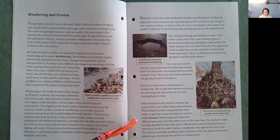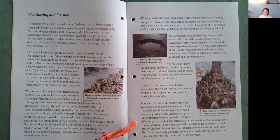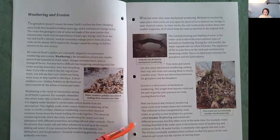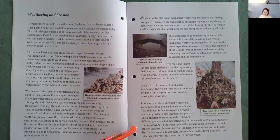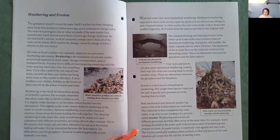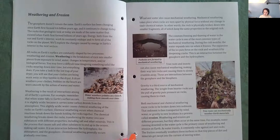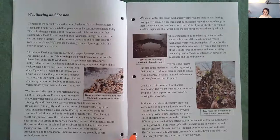Weathering and erosion are different processes, but they often occur at the same time. For example, water running downhill in the water cycle is the primary cause of weathering and erosion on earth. As water travels, it constantly rubs against soil and rocks. The friction eventually weathers these surfaces so that tiny pieces of dirt and minerals get swept into the current of moving water.